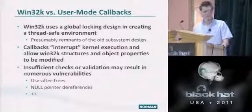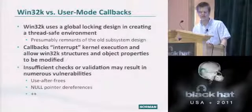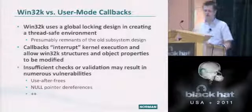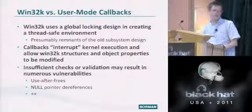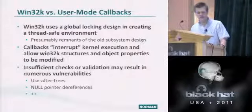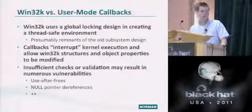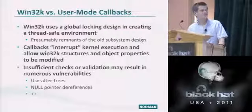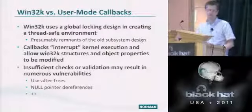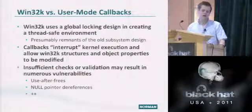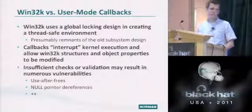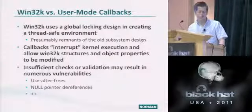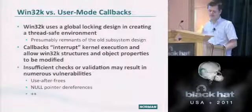To summarize briefly: Win32K uses a global locking design to create a thread-safe environment in the window manager, presumably remnants of the old subsystem design. These callbacks actually interrupt kernel execution and allow Win32K structures and objects to be modified while executing in user mode. If you don't sufficiently check for changes, you could have a number of different vulnerability classes.